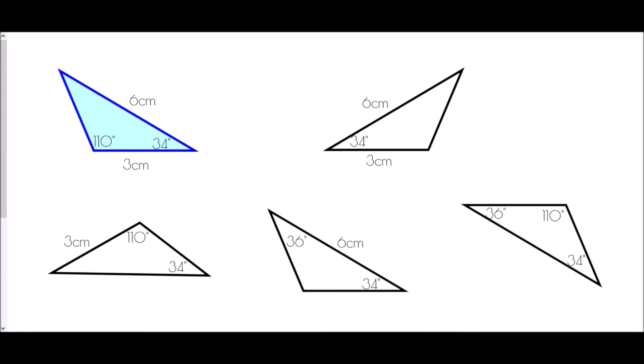Now we're going to compare each triangle to the blue triangle and decide whether we can prove congruence. In the blue triangle, I'll first work out the missing angle since we've been given 110 degrees and 34 degrees. Adding those together gives 144, and subtracting from 180 gives a third angle of 36 degrees. This is important because some of the other triangles may use that 36-degree angle, even though it wasn't given directly.